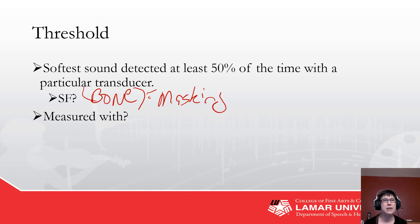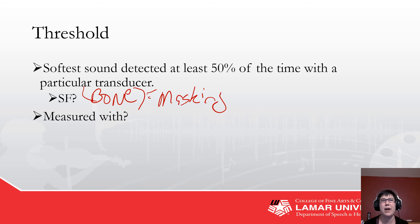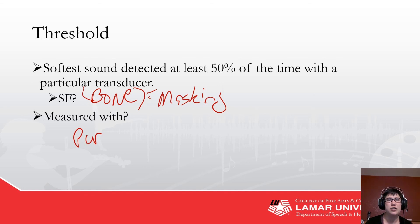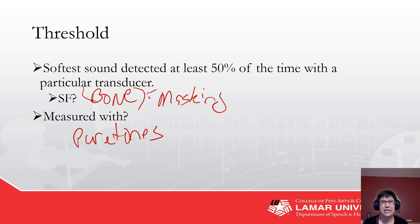Sound field can't really be made ear specific with masking because the masking would go to both ears at the same time. You can partially do it by plugging one ear or doing aided testing one ear at a time. Normally we measure threshold with pure tones, but technically you can measure it with any sound.